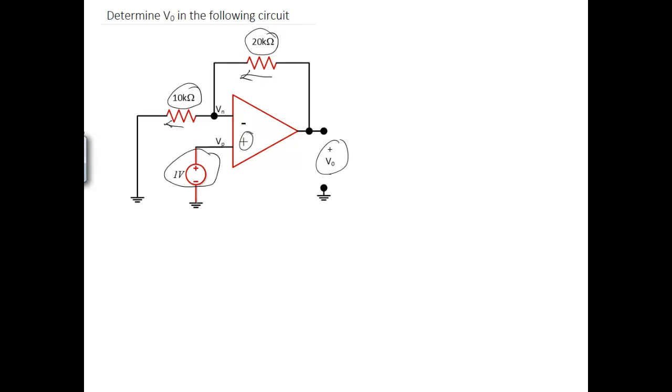So if you do this then at node Vn, we notice that the current is V0 minus Vn over 20K. That should be equal to Vn minus 0 over 10K.